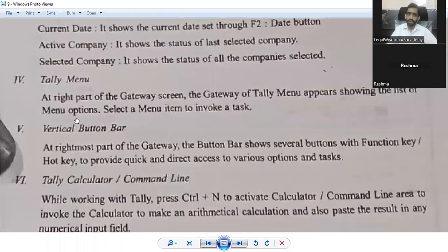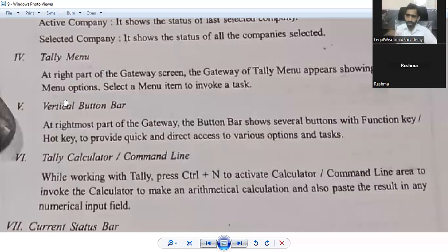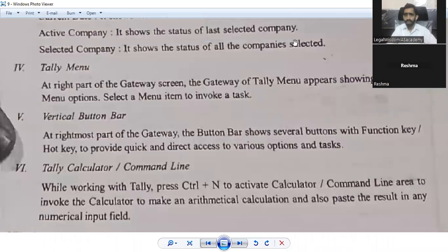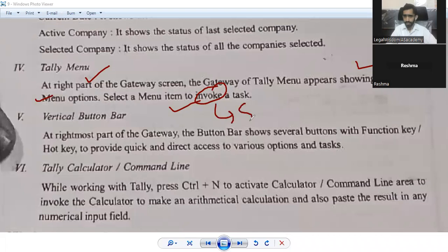Coming to the fourth, Tally menu. What is menu? It is a list of items, what services are being provided. Whatever service provider Tally provides, everything is collected there. At the right part of the gateway screen, the Gateway of Tally menu appears showing the list of menu options. Select a menu item to invoke a task - invoke means to start a task. This was your fourth one.